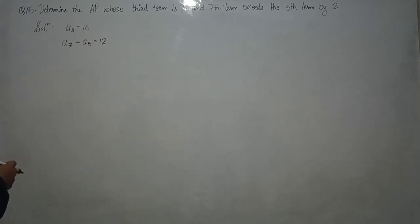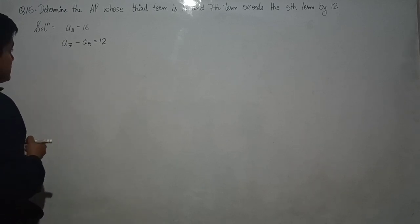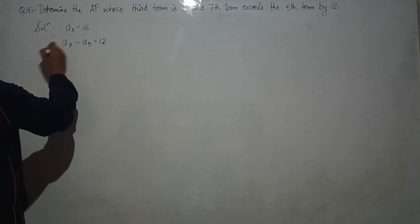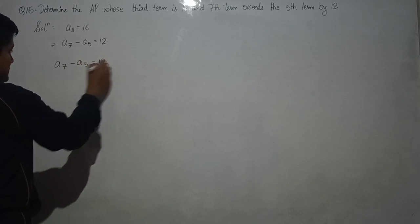Let A be the first term and D be the common difference. Let us first solve this equation. A7 minus A5 equals to 12.